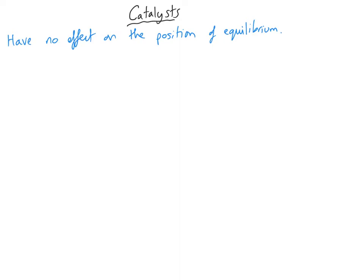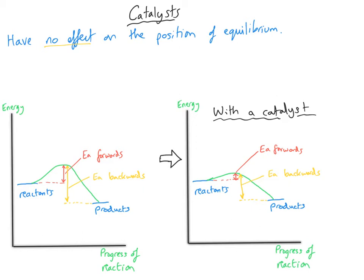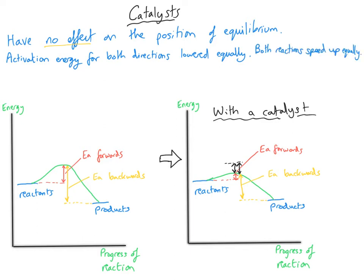Catalysts have no effect on the position of equilibrium. This becomes obvious if you consider a reaction profile. A catalyst lowers the activation energy, but it does so by the same amount for both the forwards and backwards reactions — the hill just gets lower for both directions. So the forwards and backwards reactions are both sped up by equal amounts, meaning all that happens is equilibrium is reached faster.